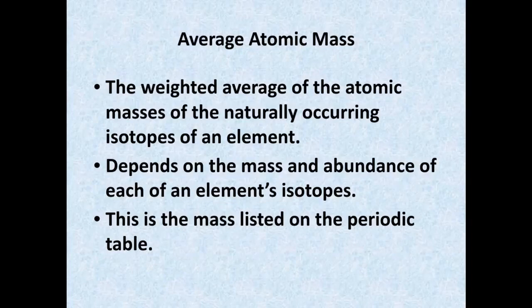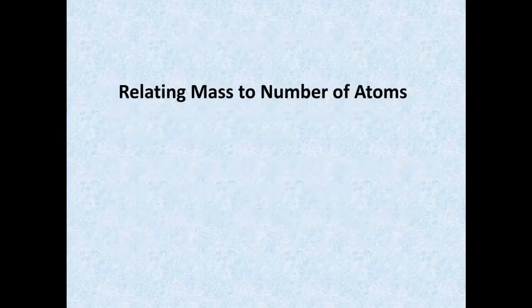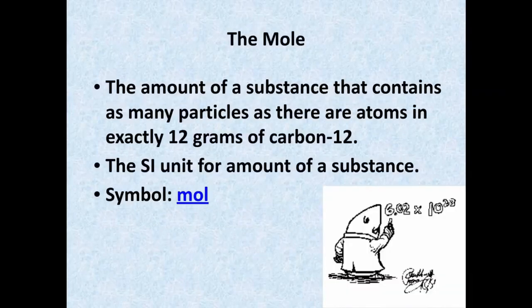For example, if we're looking at those three hydrogen isotopes, if there's more of hydrogen-1, then the average atomic mass is going to be closer to a mass of one rather than three. This leads us to relating mass to number of atoms.